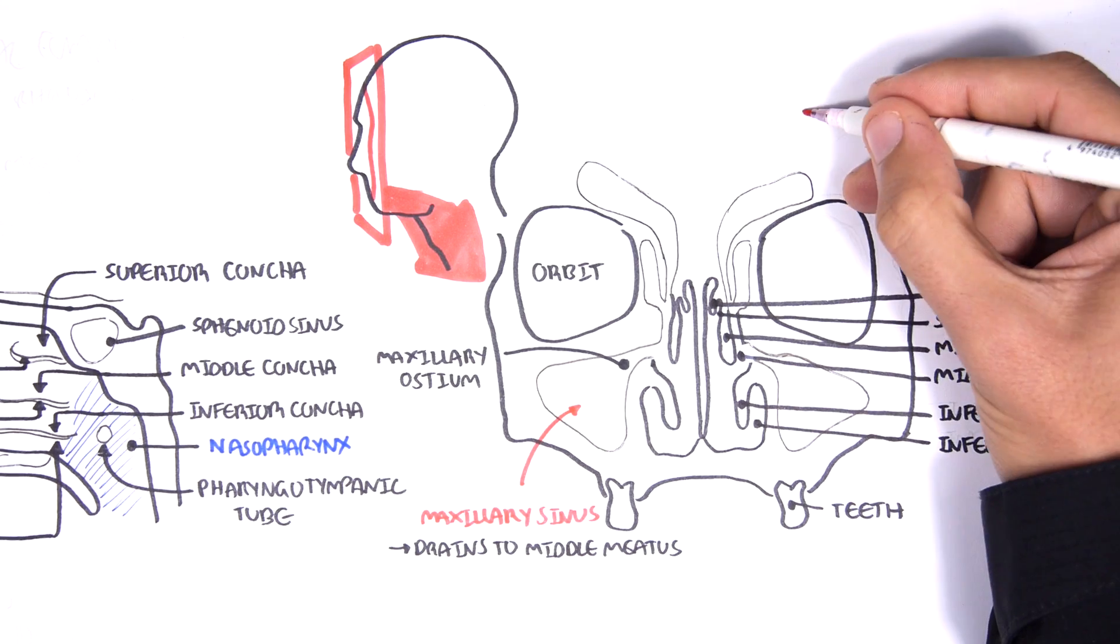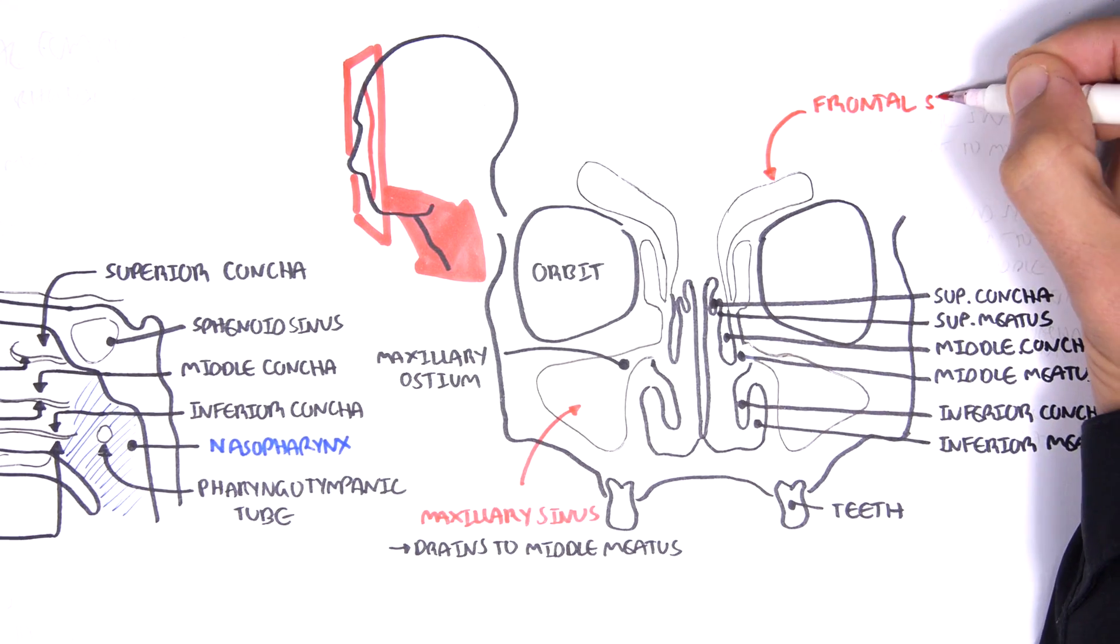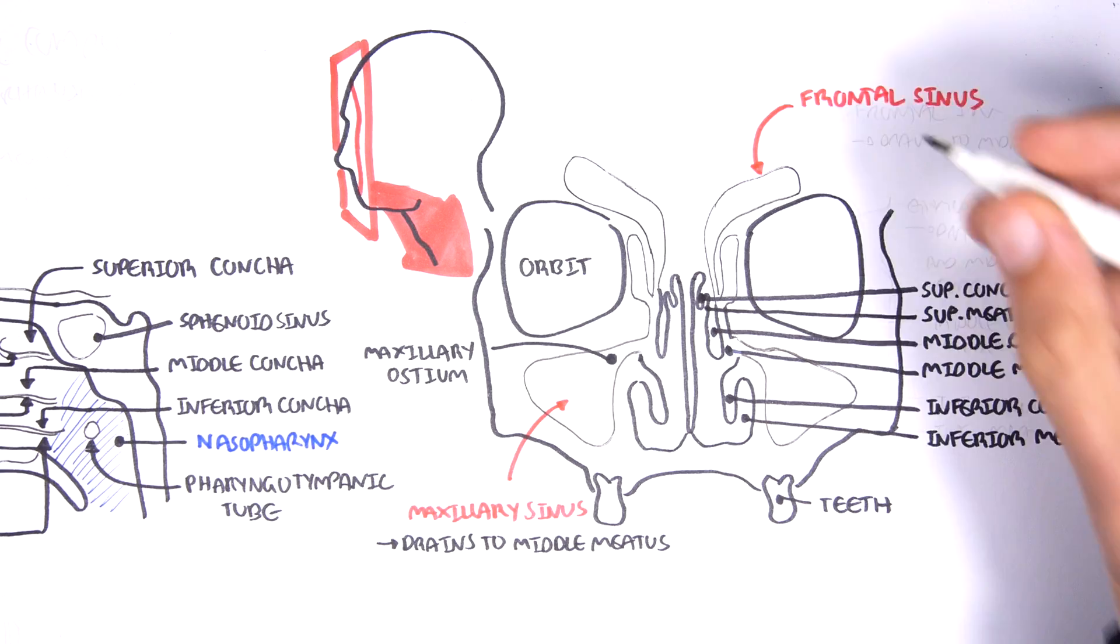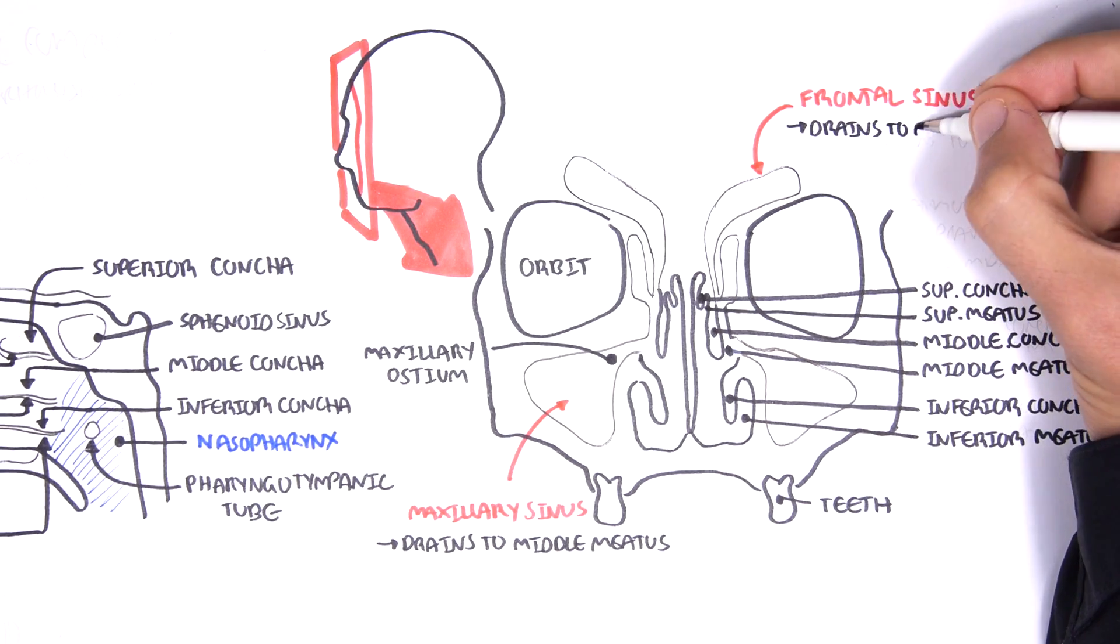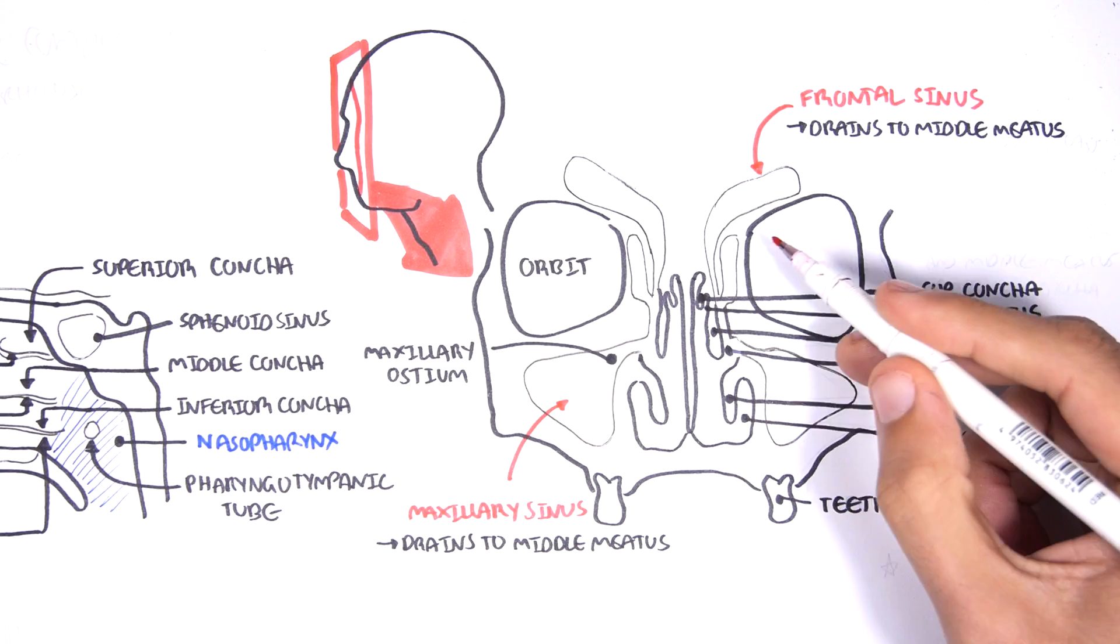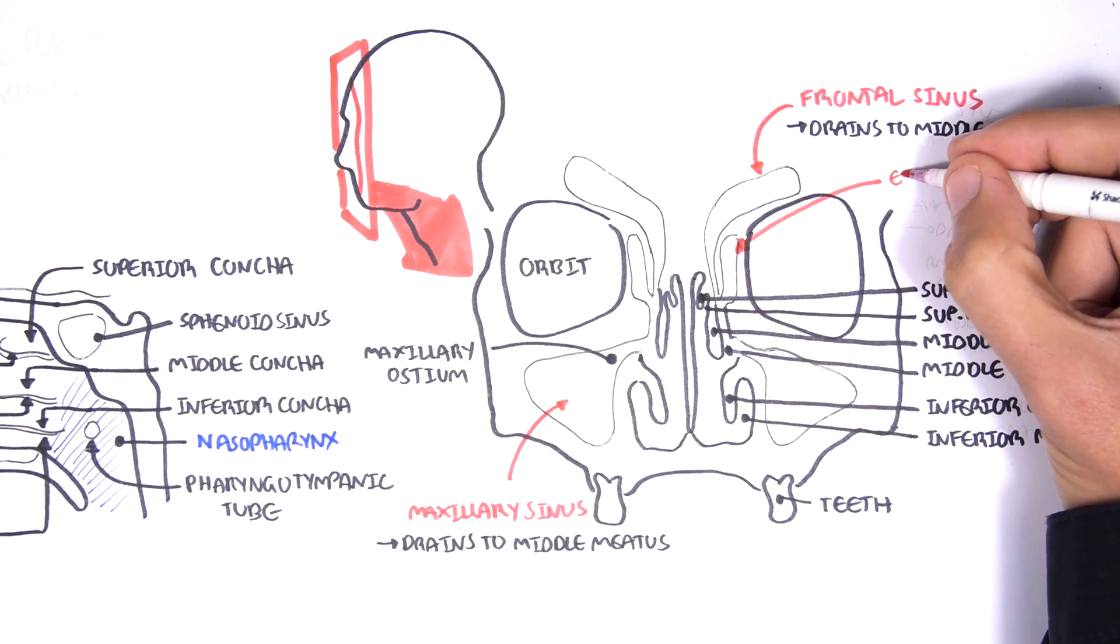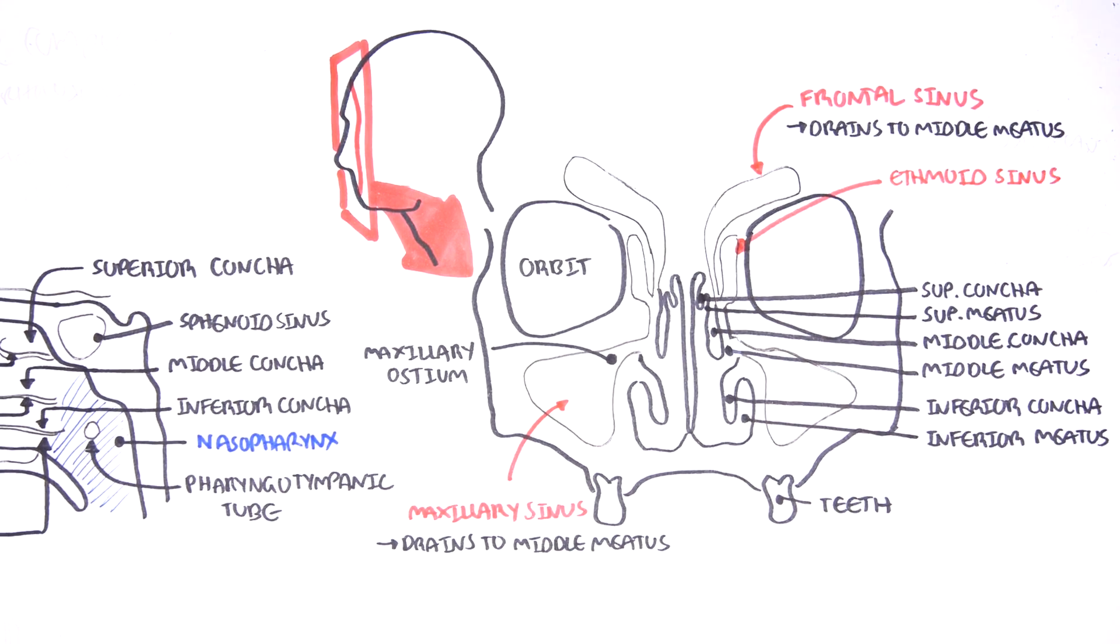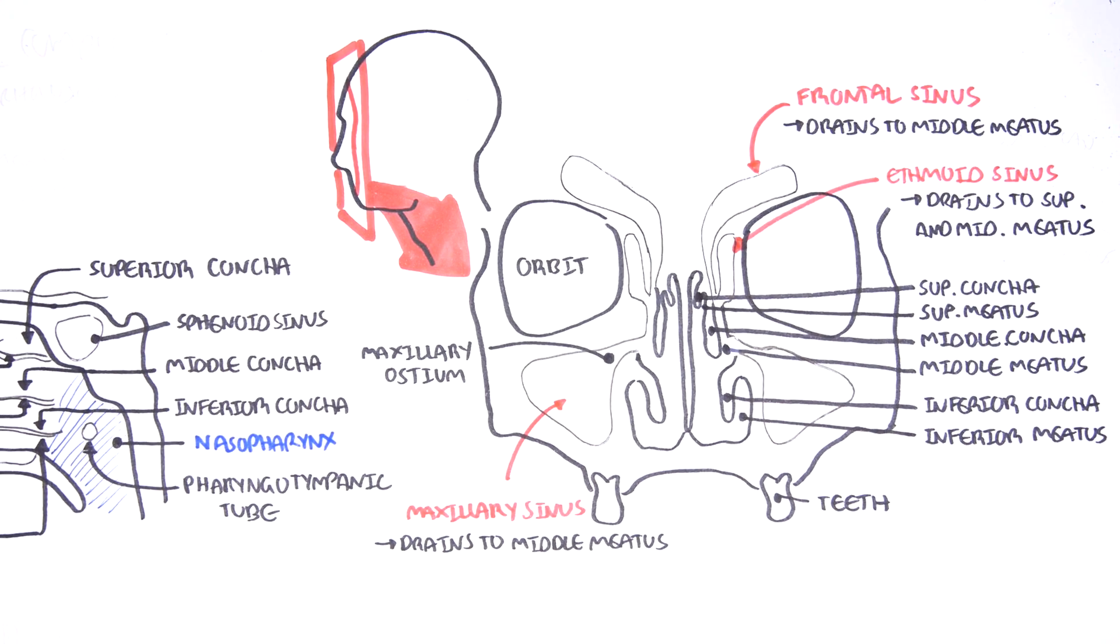Here are your frontal sinuses, which, as we talked about earlier, sit above the orbit, and they also drain into the middle meatus. The ethmoid sinus is the fourth sinus we will talk about, and sits medial to the orbit. The ethmoid sinus drains into the superior and middle meatus.